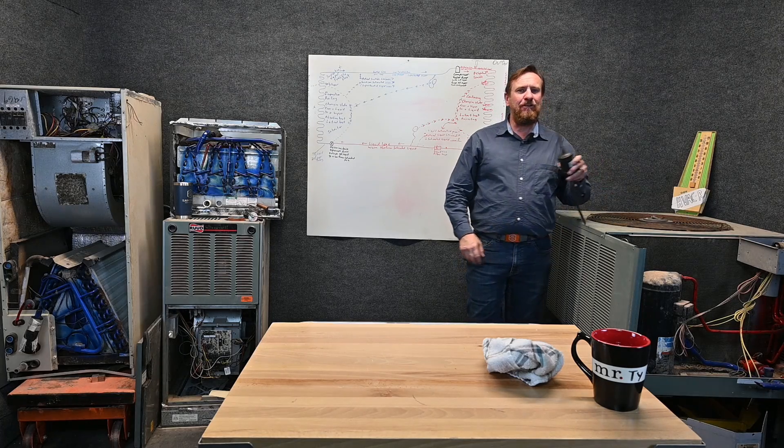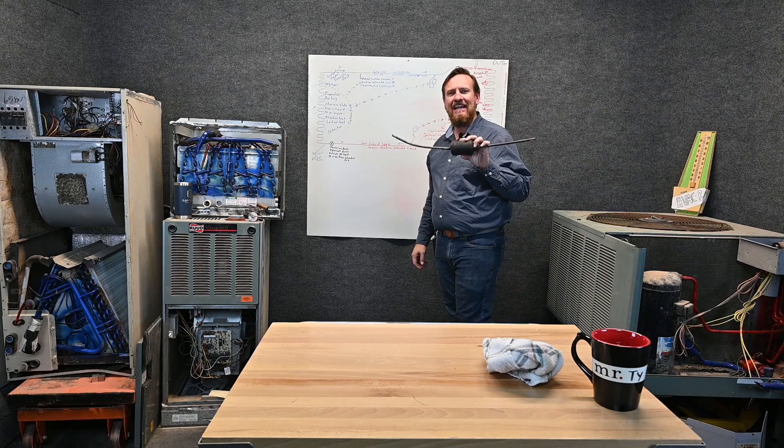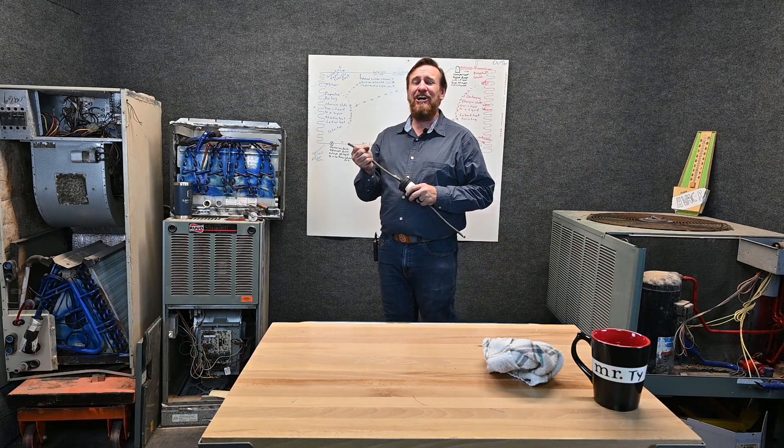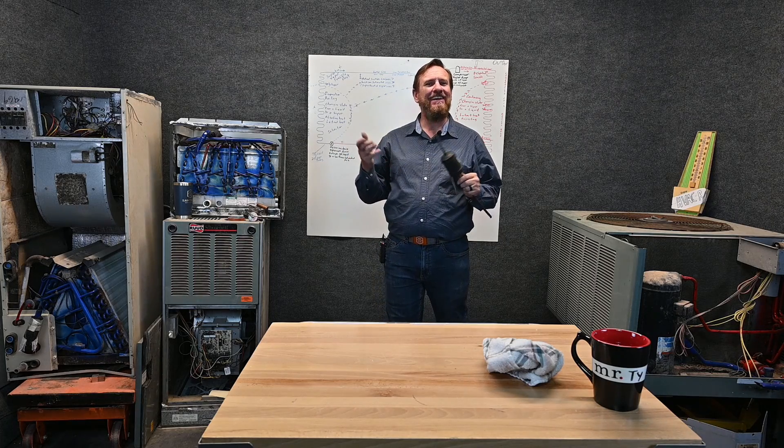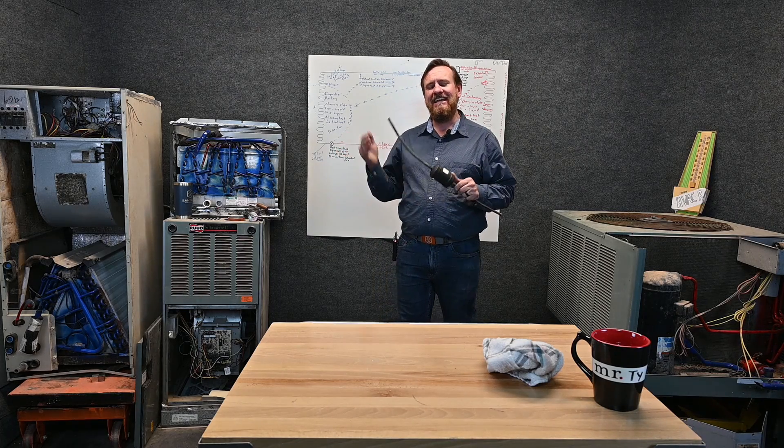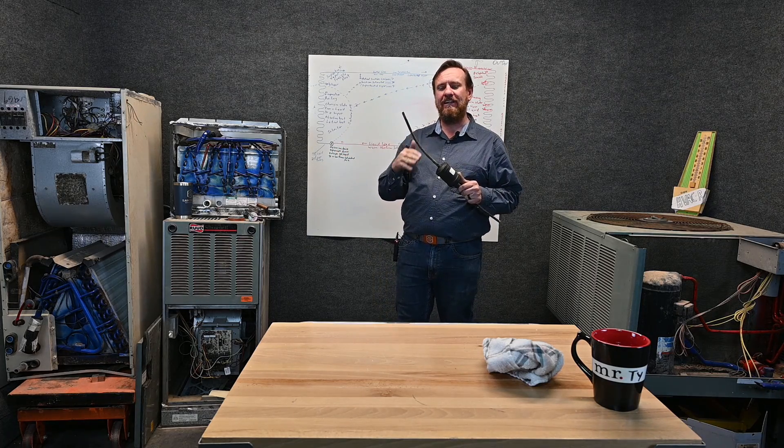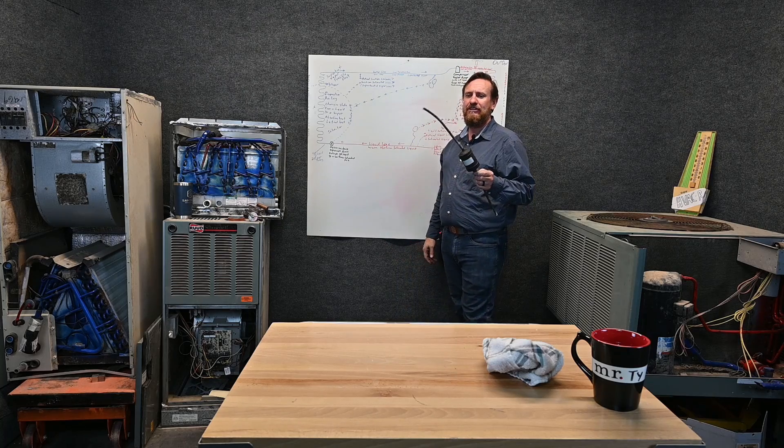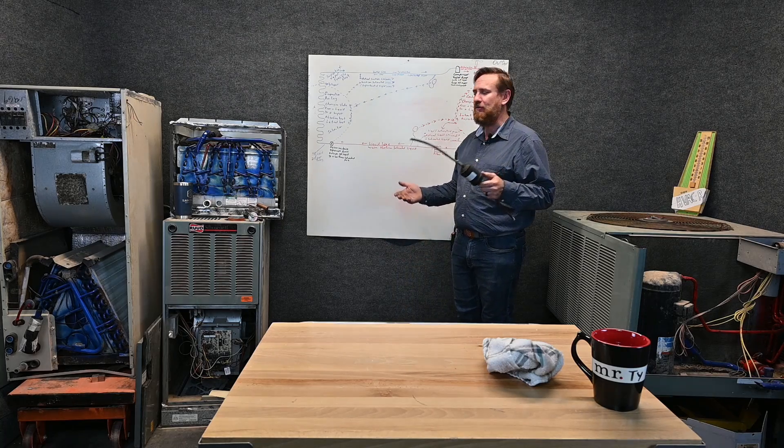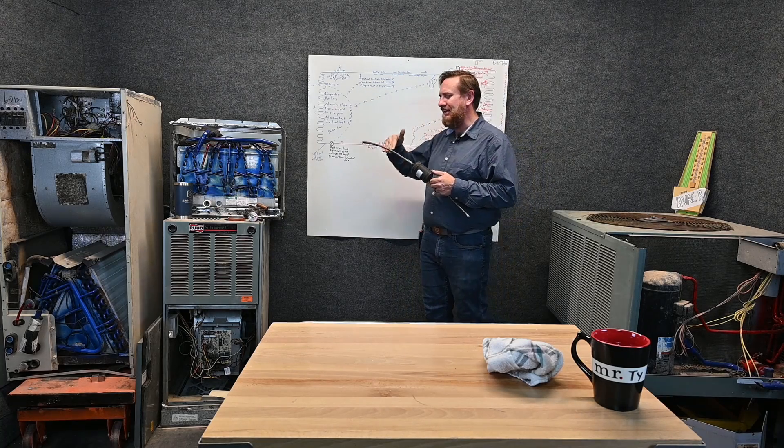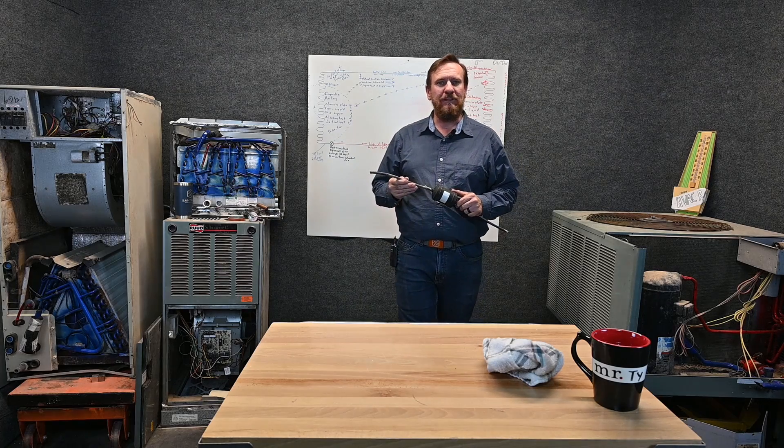But let's say our liquid line runs up the wall then it runs across the attic and our attic is say 110 degrees Fahrenheit. Second law of thermodynamics states the heat will go to the cooler area. So if this line temperature was 95, the heat from the attic is going into this line. We are losing subcooling.